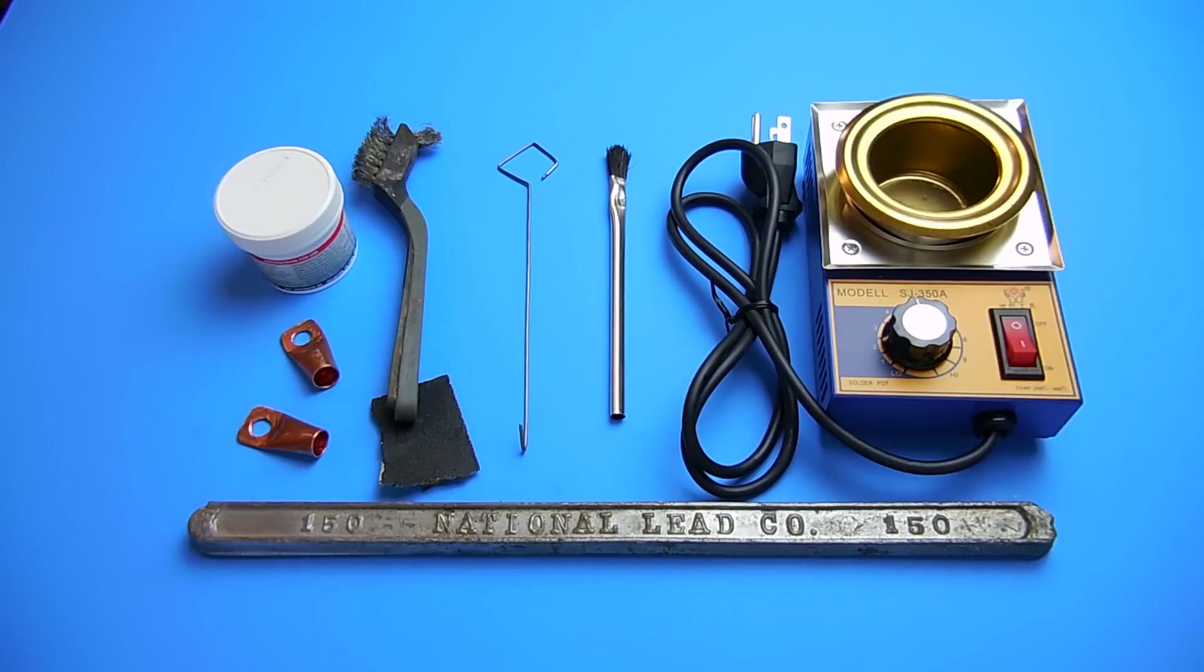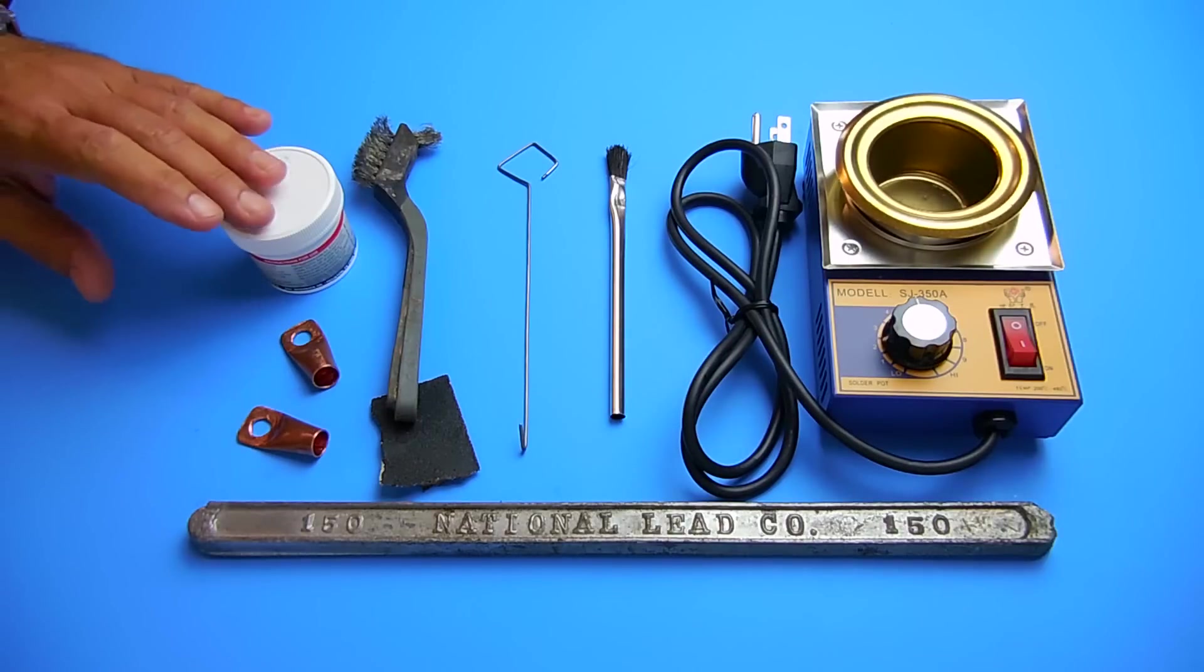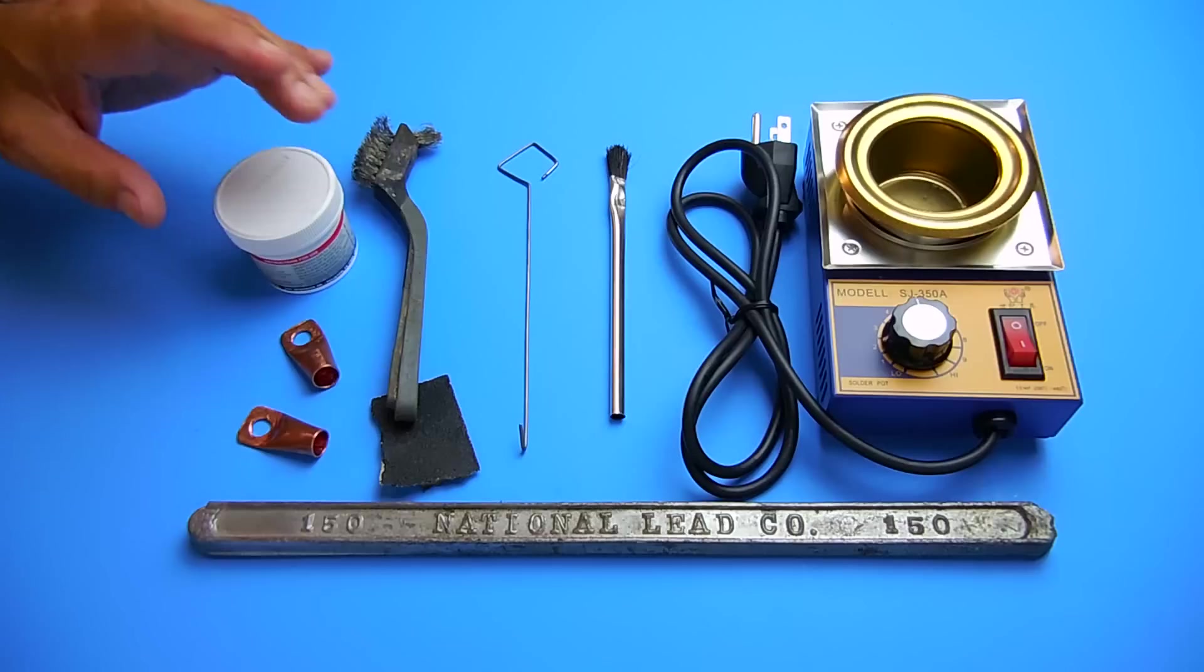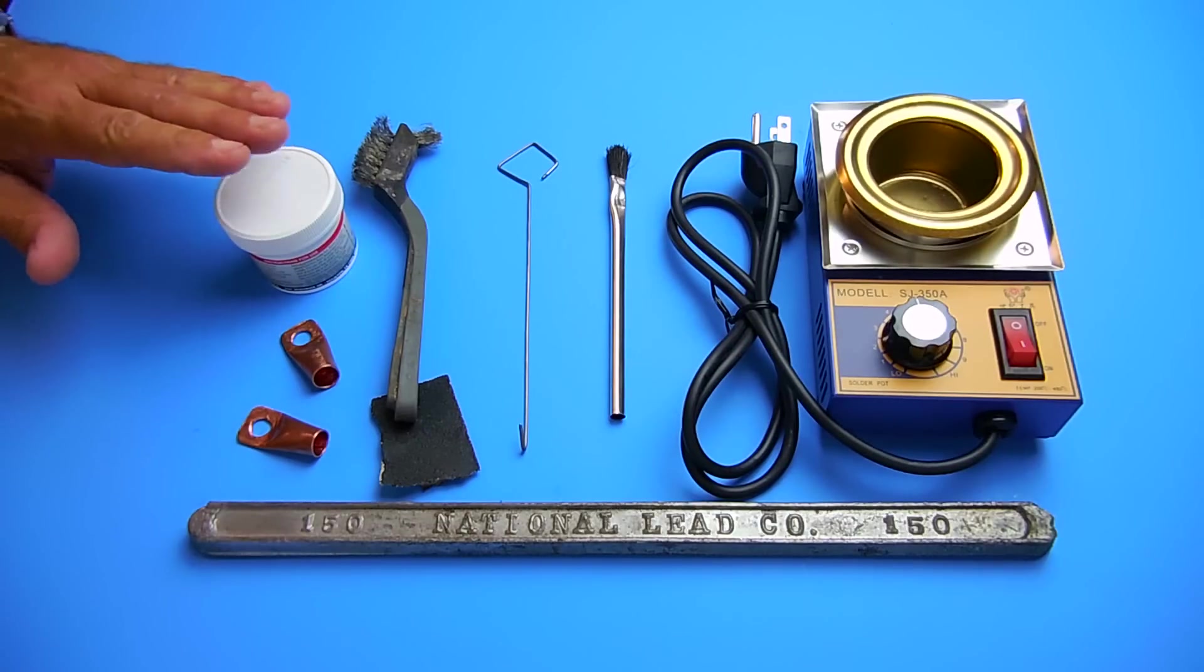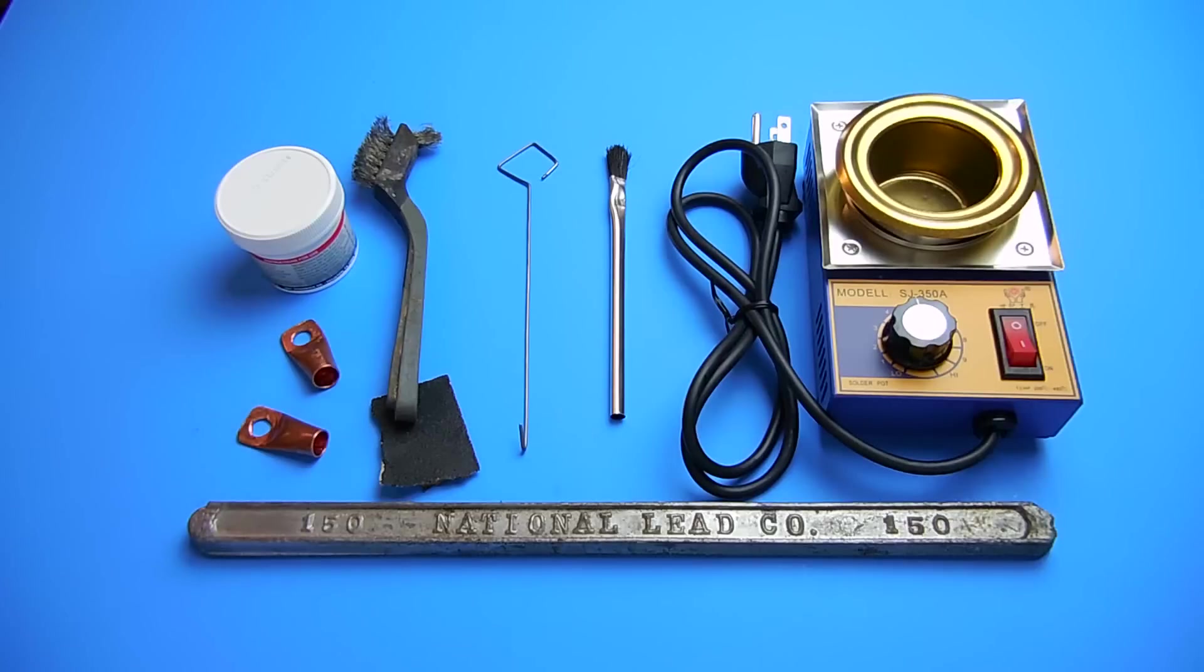In my case, I have always used ordinary no corrode paste flux which is designed for sweating copper pipes together. Some people may argue that it attacks the copper over time because there is an acid content to this, even though it's a much less corrosive flux than other flux brands. But over the years of doing this, I have never observed any negative effect from using the paste flux on these connectors. The most important thing when you're done using it is take a cloth and wipe any residue off from the flux.